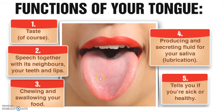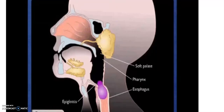Apart from that, we have the tongue in our mouths. The tongue is responsible for speaking, of course, but it is also responsible for chewing and swallowing the food. It is responsible for tasting the food, and also for the secretion of saliva and mixing the food into the saliva. It also tells us about our health — the color of the tongue can give us hints about our health.